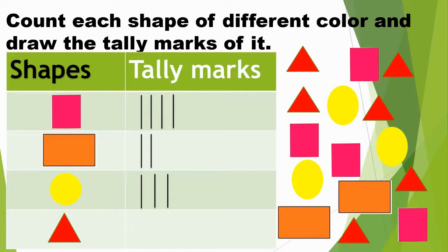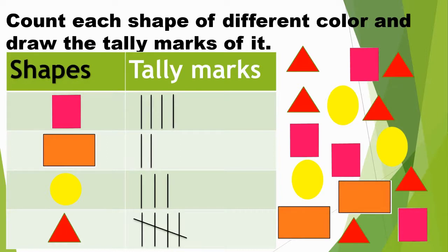Now we will count how many triangles there are: 1, 2, 3, 4, 5, 6. There are 6 triangles. Now we will draw tally marks for it: 1, 2, 3, 4, and 5. I will draw a cross line to make a group of 5, then 6.